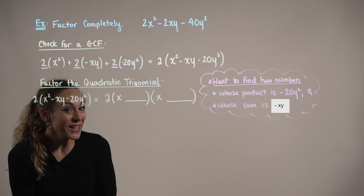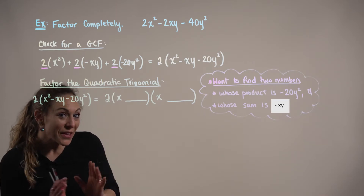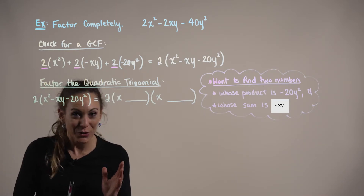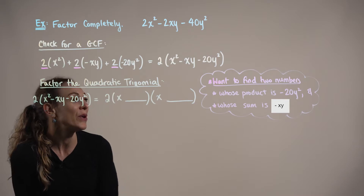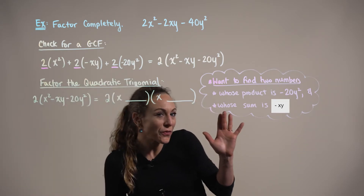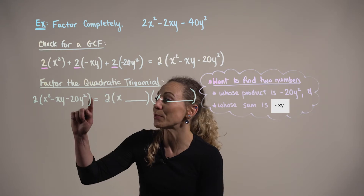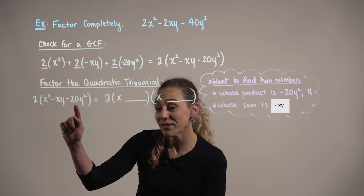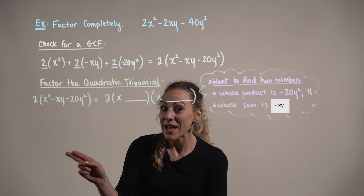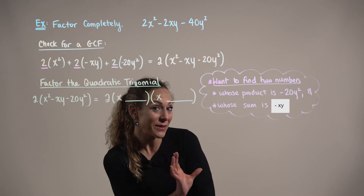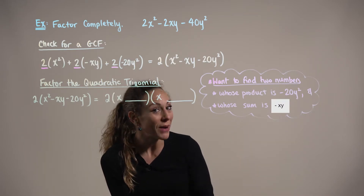Looking at our quadratic trinomial and thinking about the technique for factoring quadratic trinomials of this form, we can observe that we're looking for two numbers whose product is going to produce this constant term, minus 20y squared. And those two same numbers, when we add them together, must be equal to minus y.